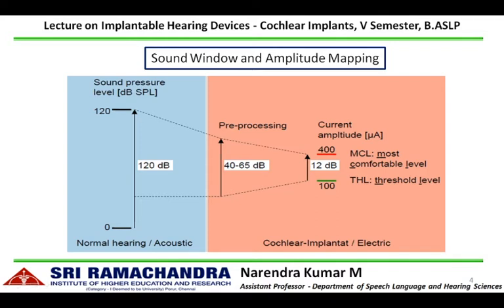The input dynamic range has to be compressed within the neural dynamic range, which varies from 30 to 40 dB. For electrical hearing, the electrical dynamic range is roughly around 15 to 20 decibels. The softest sound processed at the input dynamic range is mapped to the T-level (threshold level), and the loudest sound is mapped to the C-level (most comfortable level) of the electrical dynamic range. In cochlear implant programming, at each channel we set the T-level and C-level.